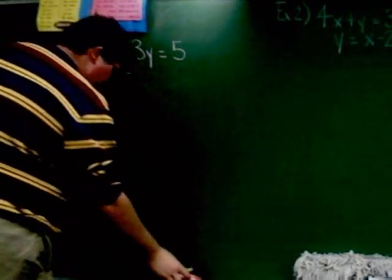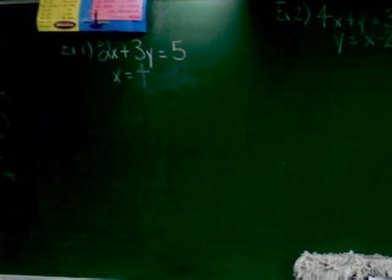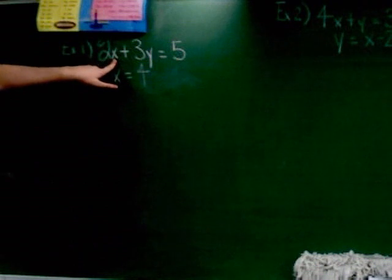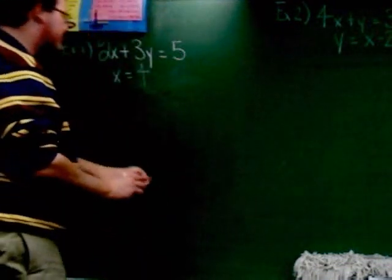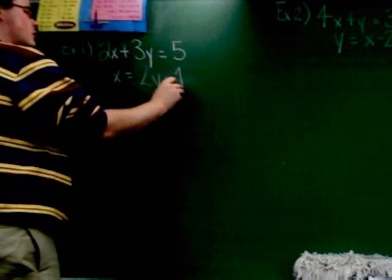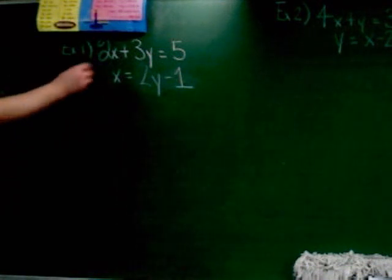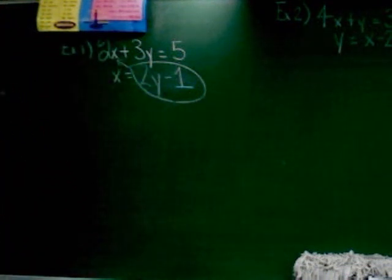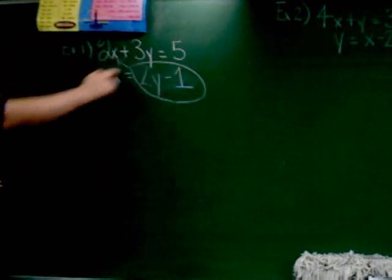If this said x equals 4, just said 4, you would say okay, well, x is 4, then I'm going to change that x into a 4. It doesn't matter that it said 2y minus 1. You're going to do the exact same thing. X is 2y minus 1. So you're going to change this x into 2y minus 1. So I'm going to rewrite this. And again, I'm changing x into 2y minus 1.